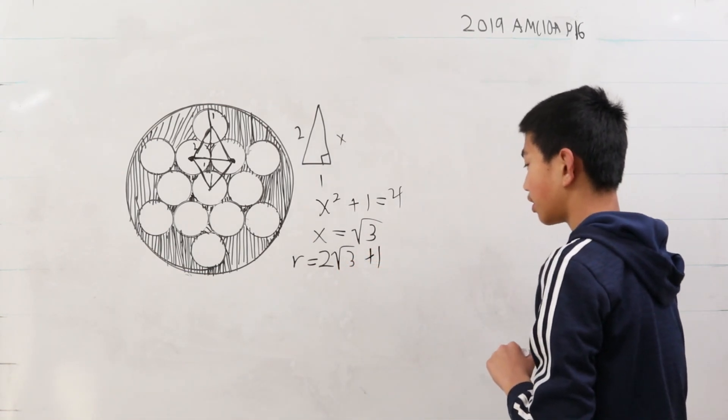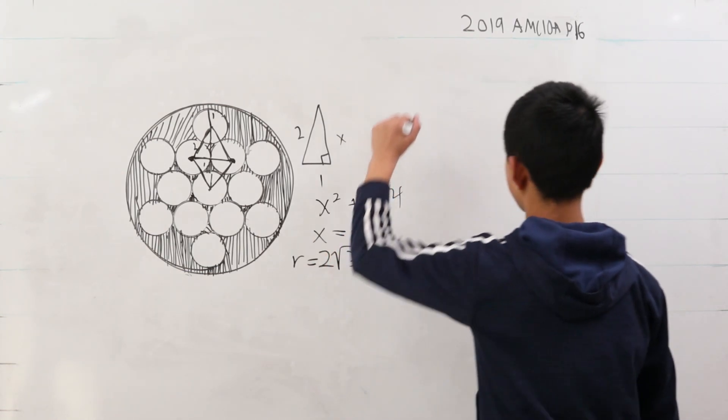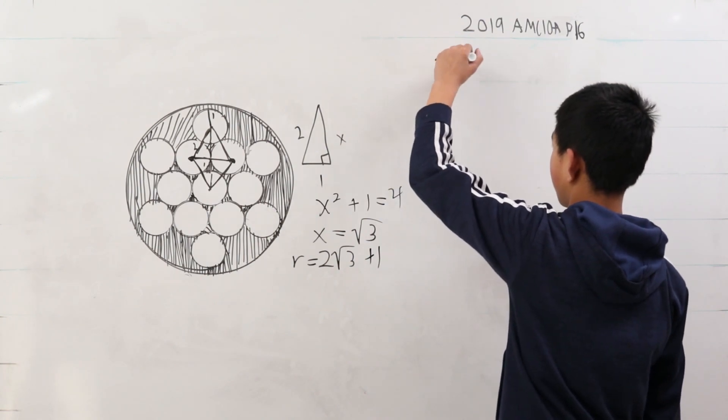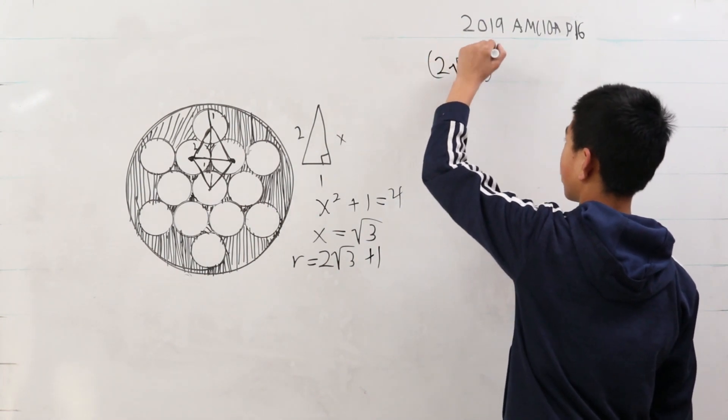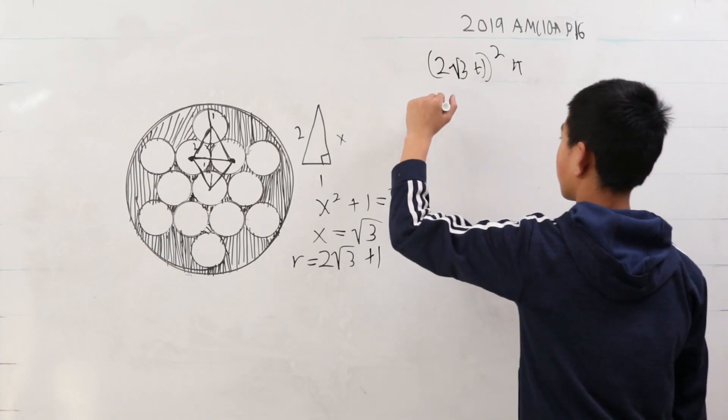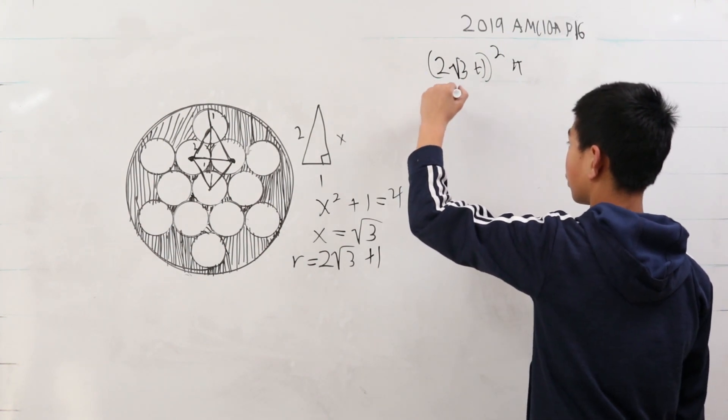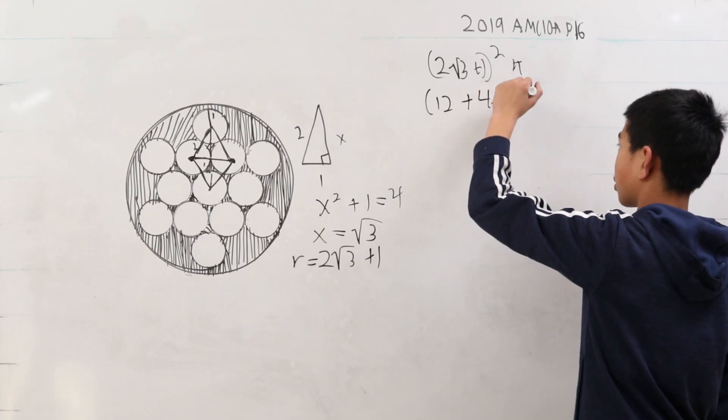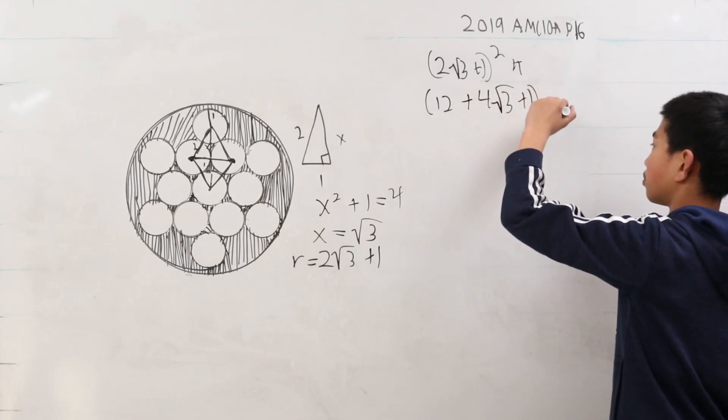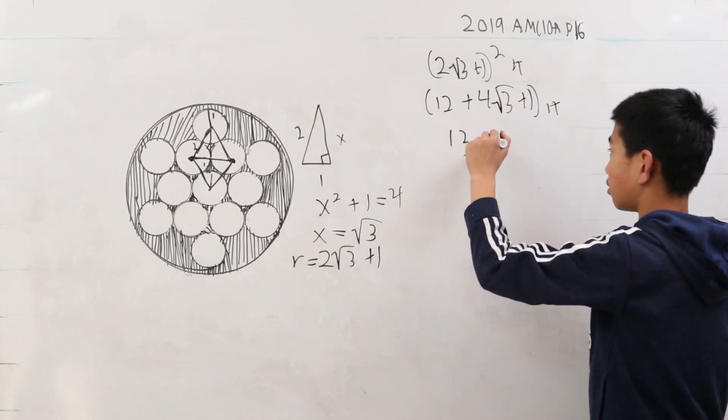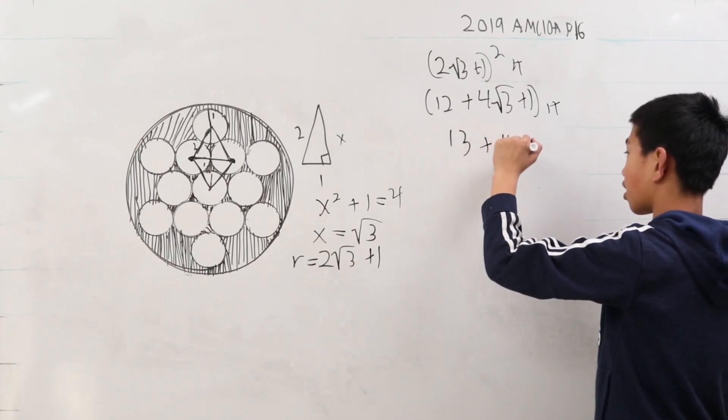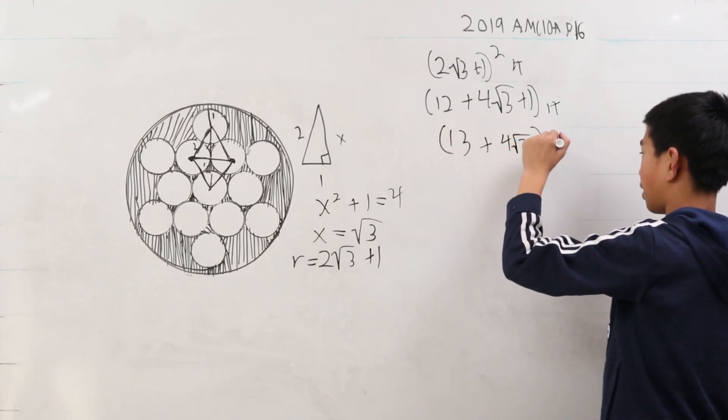Now we can find the area by squaring this. 2 root 3 plus 1 squared times Pi. This is going to be 12 plus 4 root 3 plus 1 times Pi. This is 13 plus 4 root 3 times Pi.